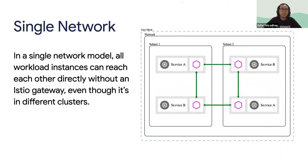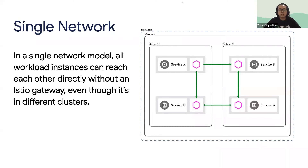We also have the network concept. In a single network setup, every workload in the mesh can communicate with each other directly without a gateway. For example, a workload in Kubernetes cluster A and a workload in Kubernetes cluster B can directly communicate with each other without needing a gateway.